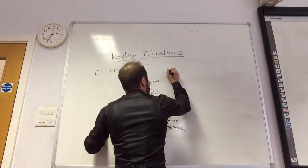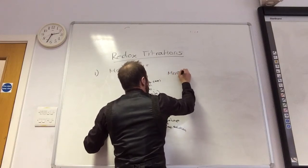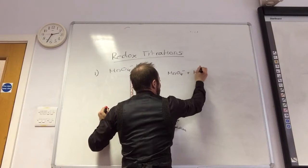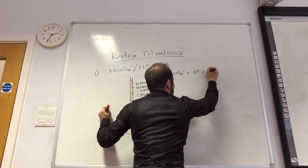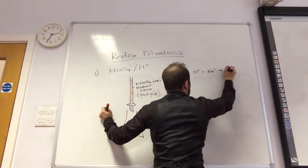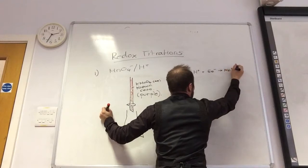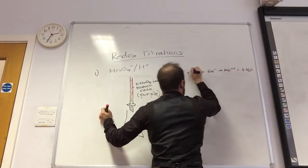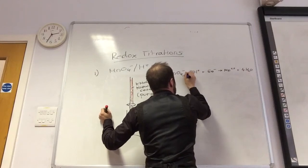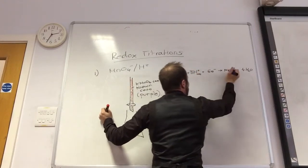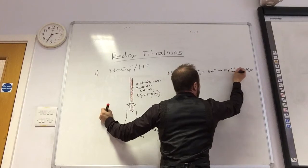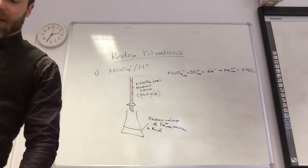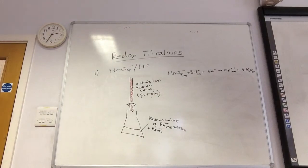So what's happening is MnO4 minus is reacting with acid and 5 electrons to become Mn2 plus plus 4H2O. So you need 8H plus. So that's one of your half equations. You've got to know that.